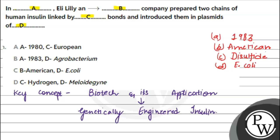So the correct line goes like: In 1983, Eli Lilly, an American company, prepared two chains of human insulin linked by disulfide bonds and introduced them in plasmids of E. coli.